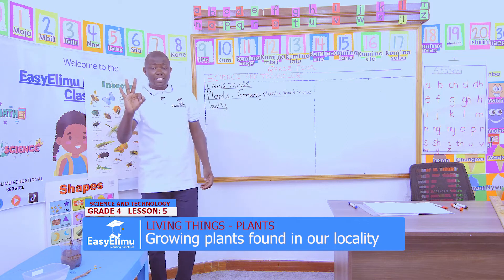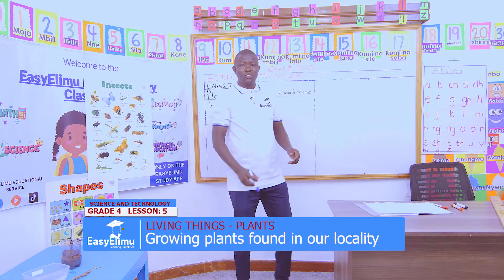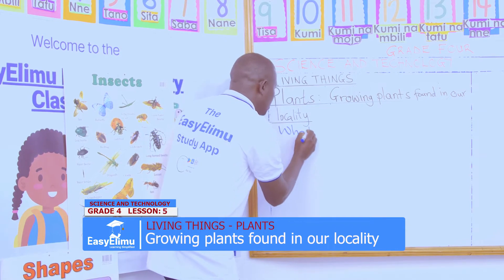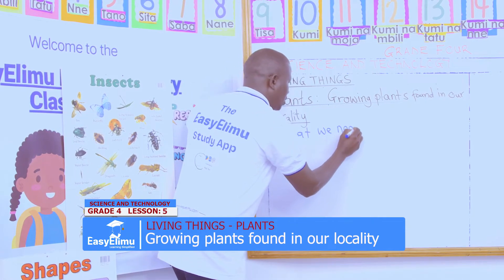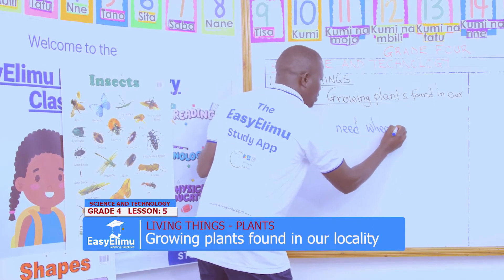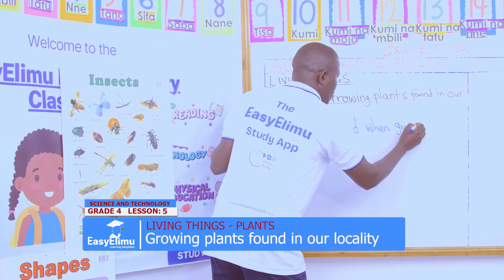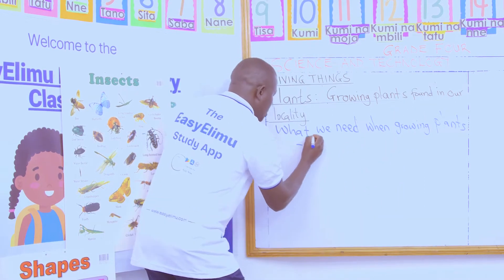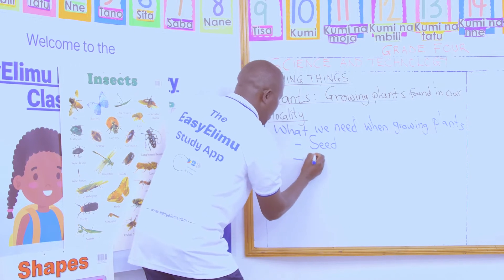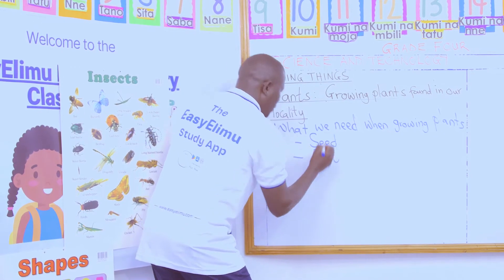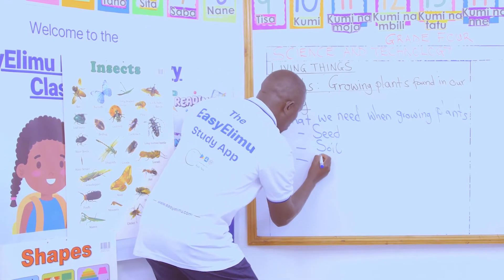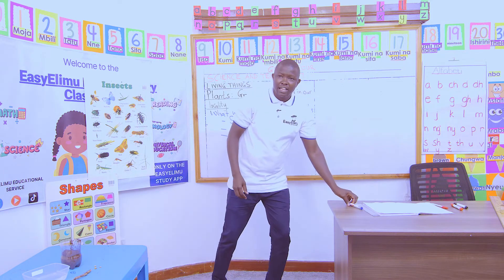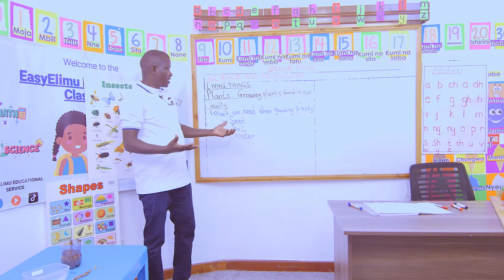There are three things mentioned in our song that are needed when we grow plants or seeds. Number one is the seed. Number two, we need soil or a garden where we can plant our seeds. And number three, we need water — water will facilitate the growing of our seeds. These are the simple things needed for a seed to grow into a big tree.